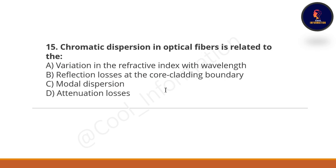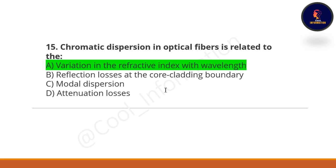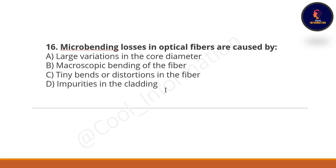Question 15: Chromatic dispersion in optical fiber is related to what? Option A: variation in the refractive index with wavelength. Option B: reflection losses at the core-cladding boundary. Option C: modal dispersion. Option D: attenuation losses. The correct option is A — variation in the refractive index with wavelength.